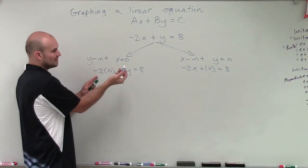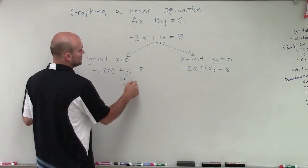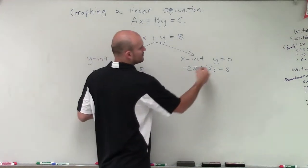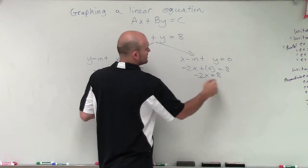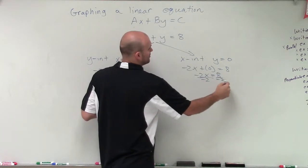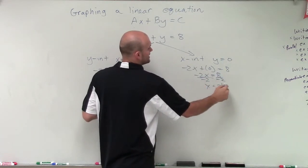Negative 2 times 0 is 0, so I'm left with y equals 8. And over here, plus 0 just leaves me with negative 2x equals 8. Divide by negative 2 on both sides, and x equals negative 4.